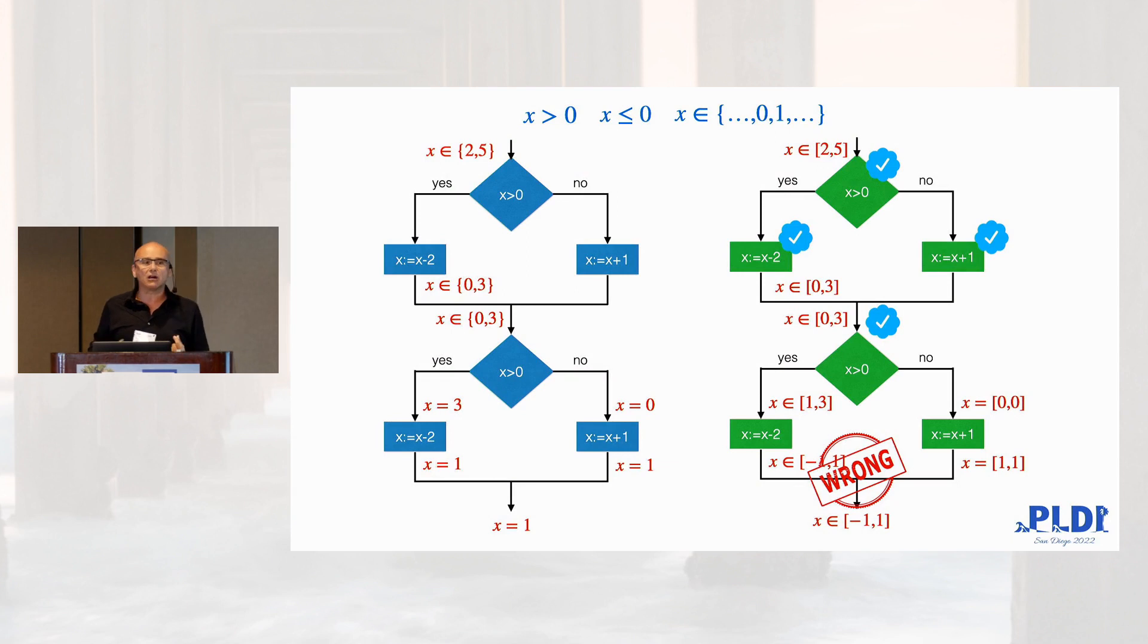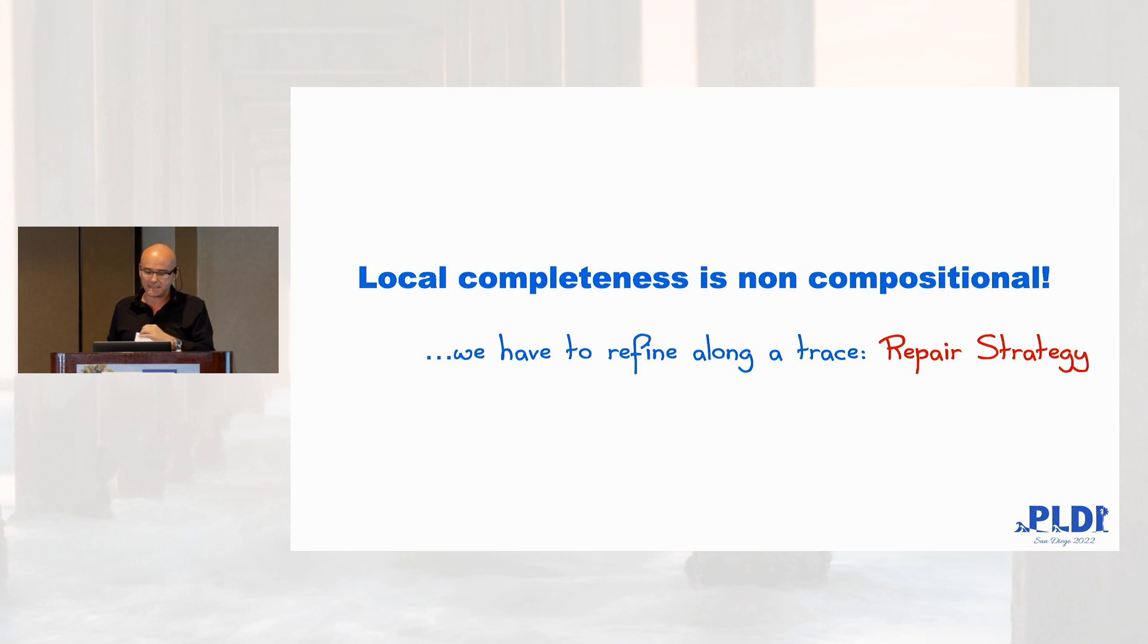So, it's not compositional. What does it mean? It means that we cannot refine the domain and then run the abstract interpreter in one shot. No, we need to refine along the computational trace. So, we need local completeness needs a repair strategy. And this is what we designed in the paper. We need to go through the trace backward or forward of course and produce the result.